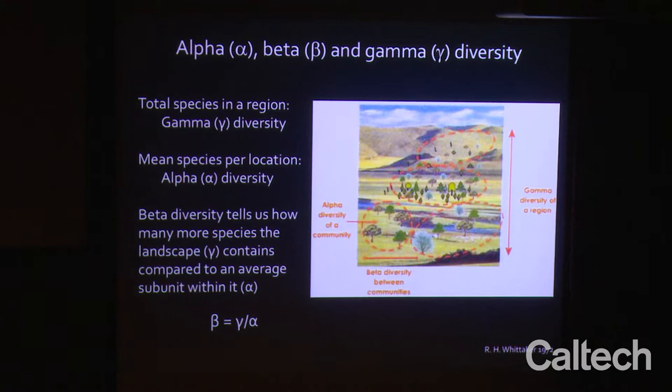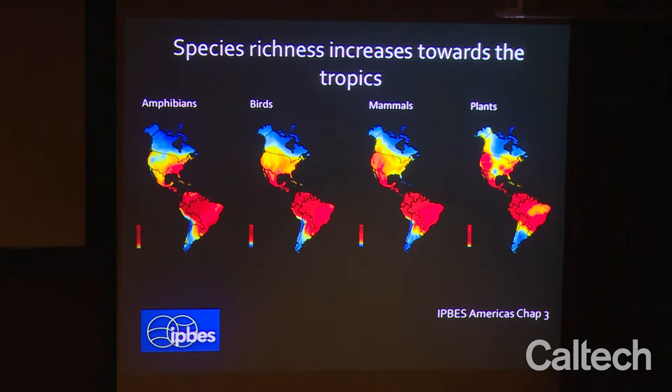Whittaker reminded us that you can have diversity measured in a whole landscape and diversity measured in individual communities. He came up with the beta diversity concept: how many more species the landscape contains compared to an average subunit within it. Beta equals gamma over alpha. Since then, the way we think about beta diversity has proliferated into myriad concepts. For amphibians, birds, mammals, and plants, the IPBES Americas Regional Assessment shows increasing diversity at tropical latitudes compared to temperate latitudes.